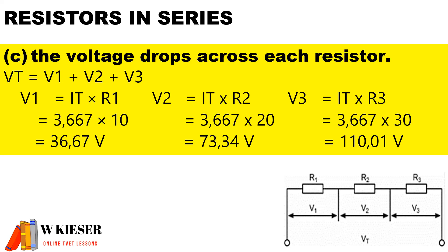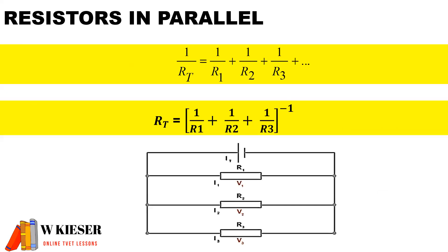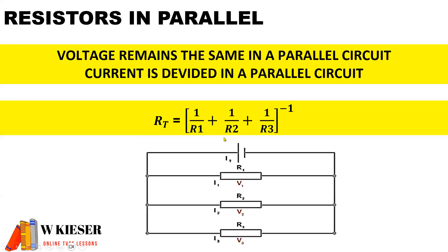For a parallel circuit there is more than one method to calculate the total resistance. Normally the formula on the formula sheet looks like the one at the top; however, I prefer to use one over R1 plus one over R2 plus one over R3, all to the power of minus one — that way we don't have to invert the resistance total at the end. For a parallel circuit, voltage remains the same across the parallel branch and current is divided.